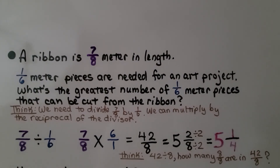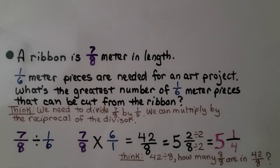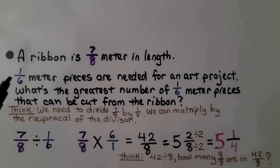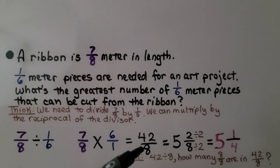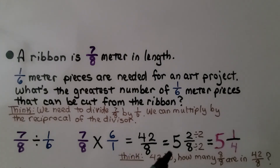Here we have another word problem with a couple of steps. A ribbon is seven-eighths meter in length. One-sixth meter pieces are needed for an art project. What's the greatest number of one-sixth meter pieces that can be cut from this ribbon? We need to divide seven-eighths by one-sixth, multiplying by the reciprocal of the divisor. We do seven-eighths times six over one: seven times six is forty-two, eight times one is eight, giving forty-two-eighths. Five times eight is forty, so there are five whole pieces with two-eighths left over — that's five and two-eighths, or five and one-fourth.